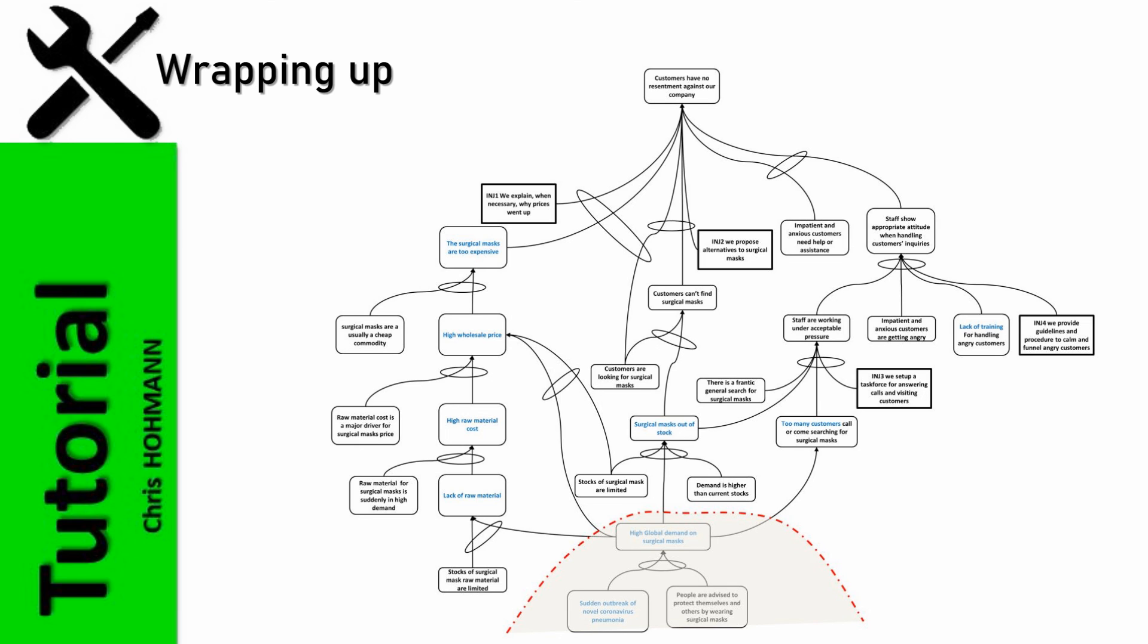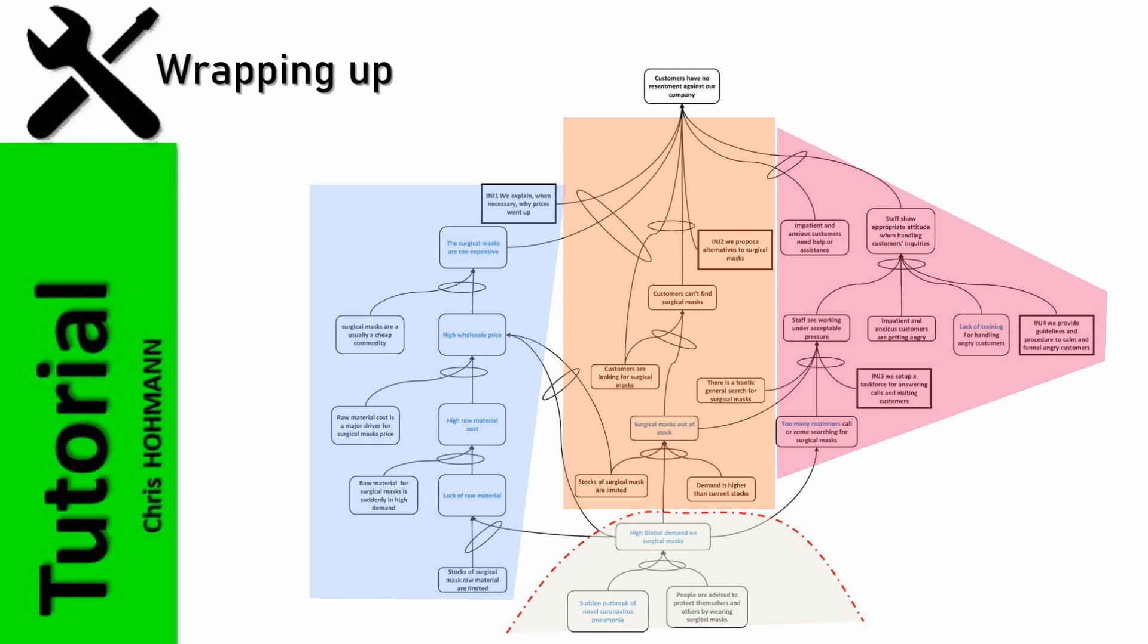If lucky, a single injection can get rid of the whole problem, but such silver bullets are scarce. It is more likely that several injections, at various stages in the tree, are necessary. This is the case with the example I presented to you, where three distinct branches need injections.